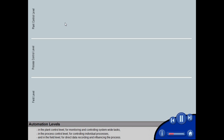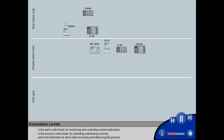In the plant control level, for monitoring and controlling system-wide tasks. In the process control level, for controlling individual processes. And in the field level, for direct data recording and influencing the process.